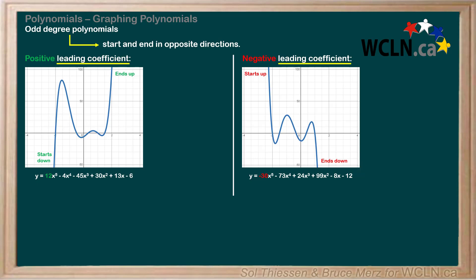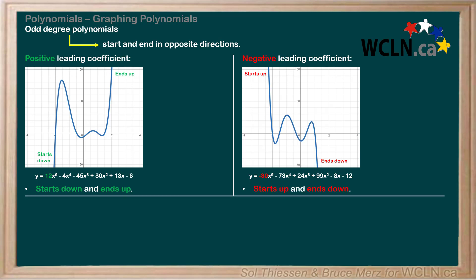So how does the sign of the leading coefficient — the coefficient on the highest degree term — affect the end behavior of odd degree polynomials? An odd degree polynomial with a positive leading coefficient starts down and ends up. An odd degree polynomial with a negative leading coefficient does the opposite: it starts up and ends down. I find it useful to compare with a linear function of the form mx plus b when trying to remember how odd degree functions behave.